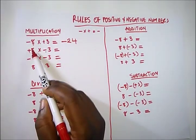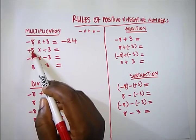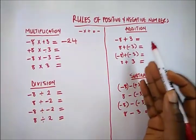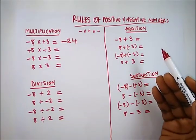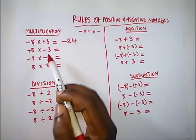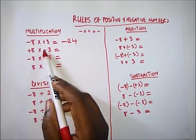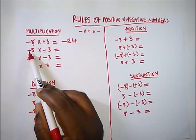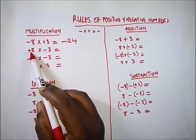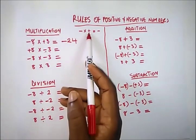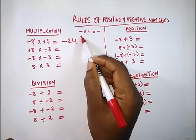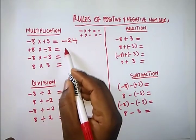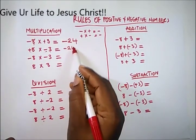Here we also have a plus and a negative. In multiplication, you don't need to factor in which integer is the biggest or smallest — that matters in addition, not here. In multiplication we're just concerned about the sign, while the integers simply multiply. Plus times negative also gives us a negative, so 8 times 3 is 24 and we get minus 24.